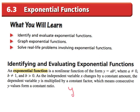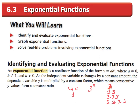Which means consecutive y values form a constant ratio. Here's what this means. If you had 3 to the x power and x was 1, you'd just have 3. If x was 2, it'd be 3 times 3. If x was 3, it'd be 3 times 3 times 3. If x was 4, it'd be 3 times 3 times 3 times 3. This is tripling every time — you are multiplying by a constant factor. In this case, the constant factor is 3.